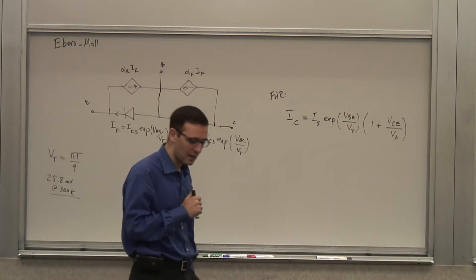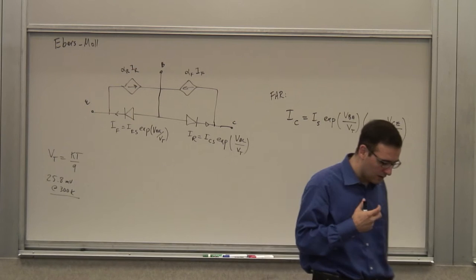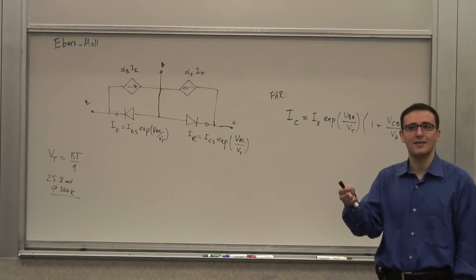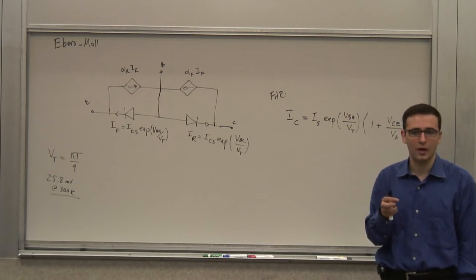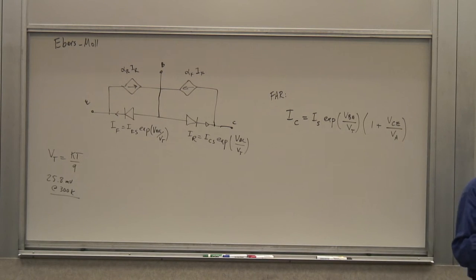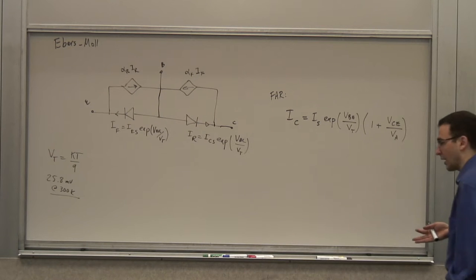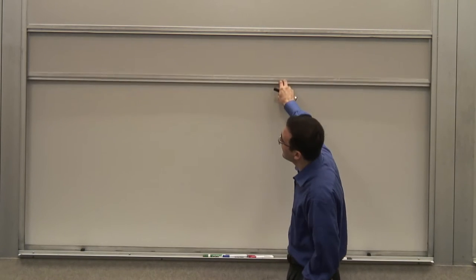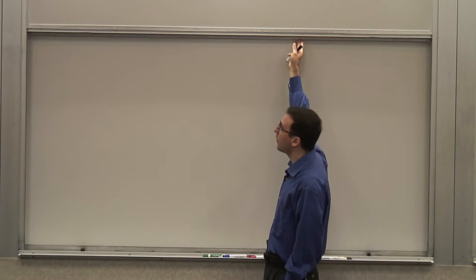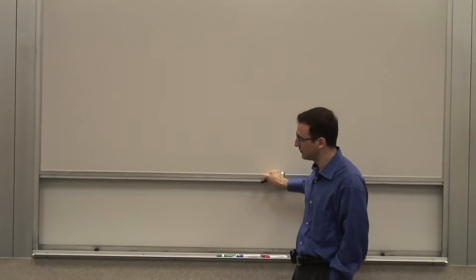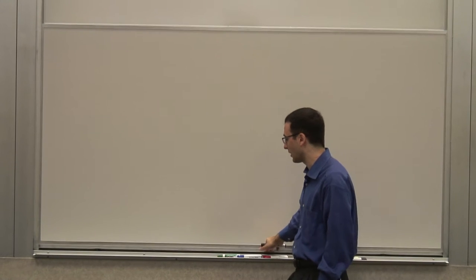What we'll do today is start linearizing this — arrive at the small signal model that we'll use quite often. In doing so, we'll try to understand the limitations of this model, as well as what it allows you to do. In many of our calculations throughout the course, we'll go back and forth between the nonlinear large signal model and the linear small signal model, depending on what we're trying to achieve.